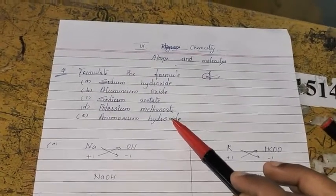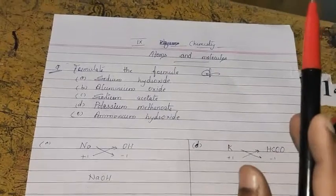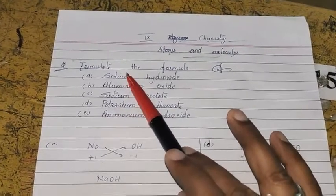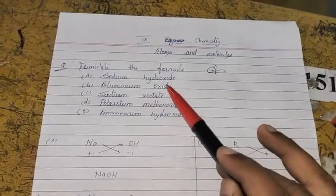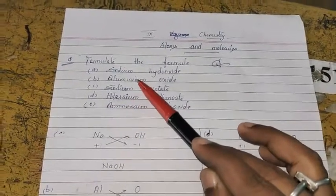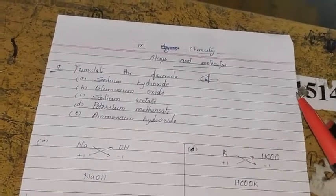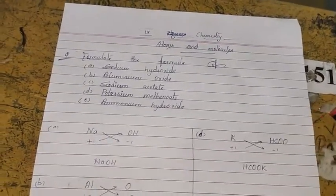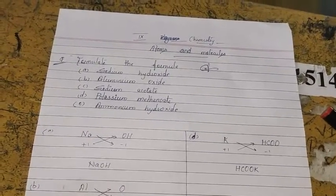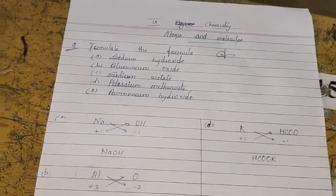Dear students, to formulate the formula of different chemical substances, we must have the knowledge of ions — that is, cations as well as anions. For example, we must know the formula of the sodium ion, hydroxide ion, oxide ion, acetate ion, methanoate ion, ammonium ion, potassium ion, and aluminium ion. First of all, you have to memorize all the ions discussed in my previous videos. After memorizing those ions, you can easily formulate the chemical formula of many compounds in your syllabus.